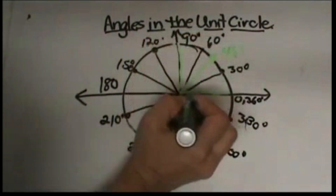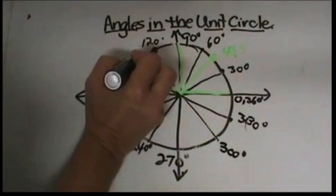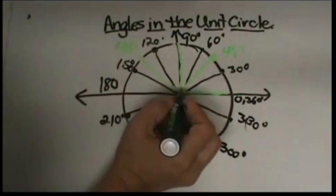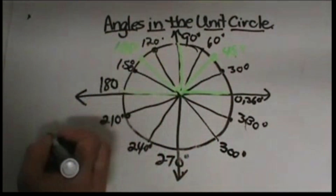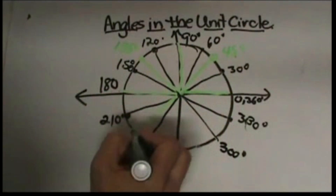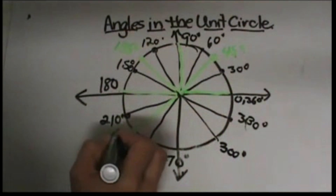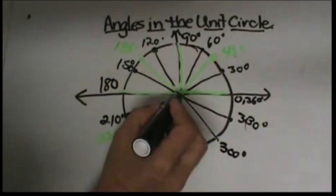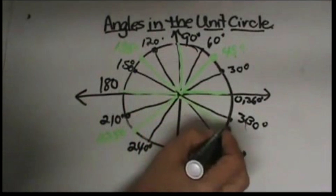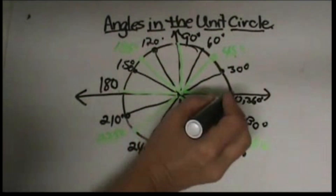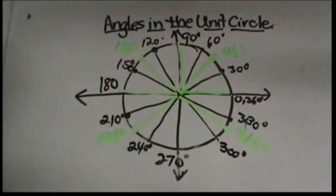Then we hit 90. Then 90 plus 45 is 135. We add another 45 and that brings us to 180. 180 plus 45 is 225, and then adding another 45 is 270. 270 plus 45 brings us to 315, and then 315 plus 45 brings us back around to 360.